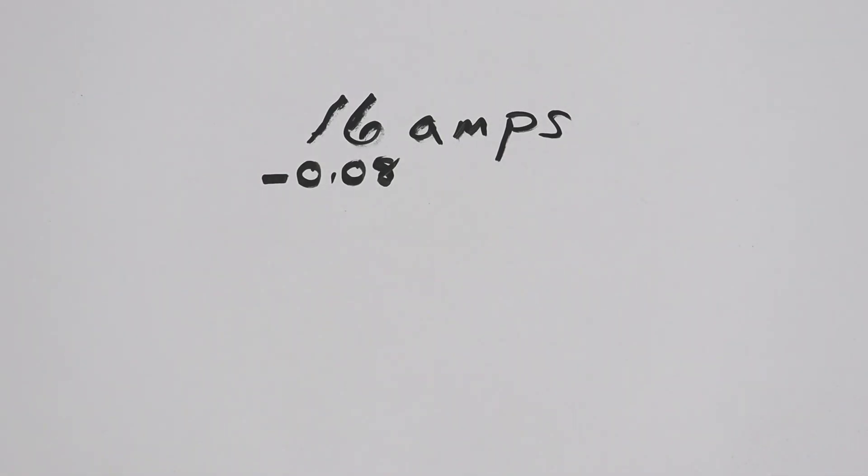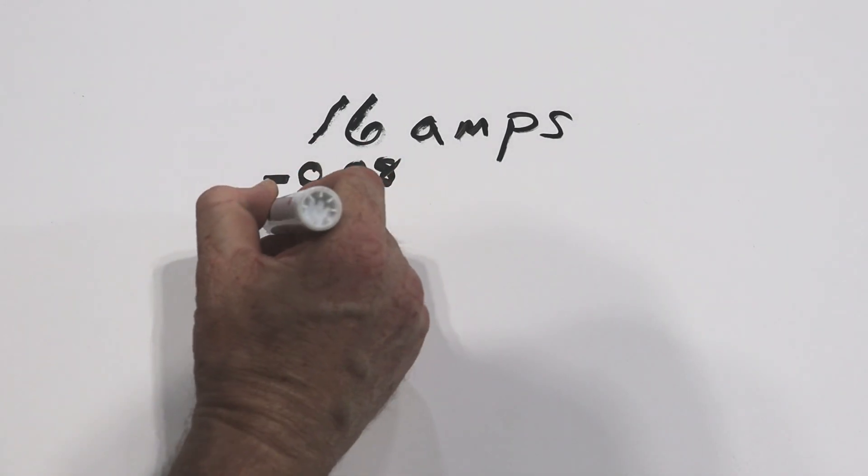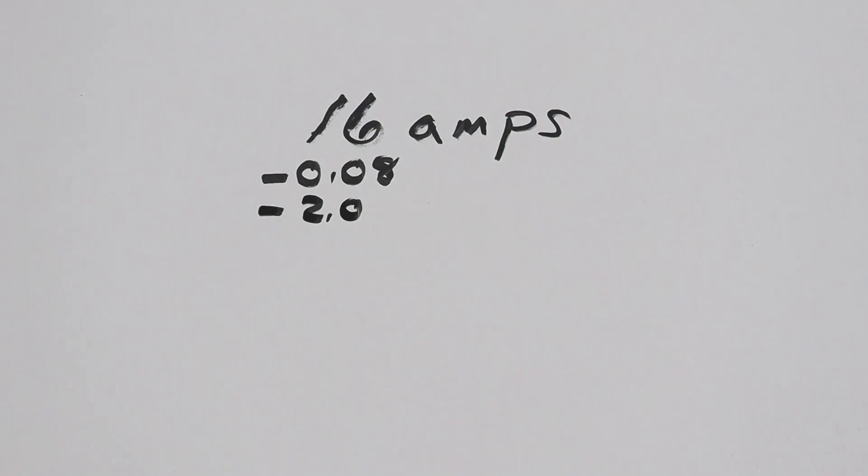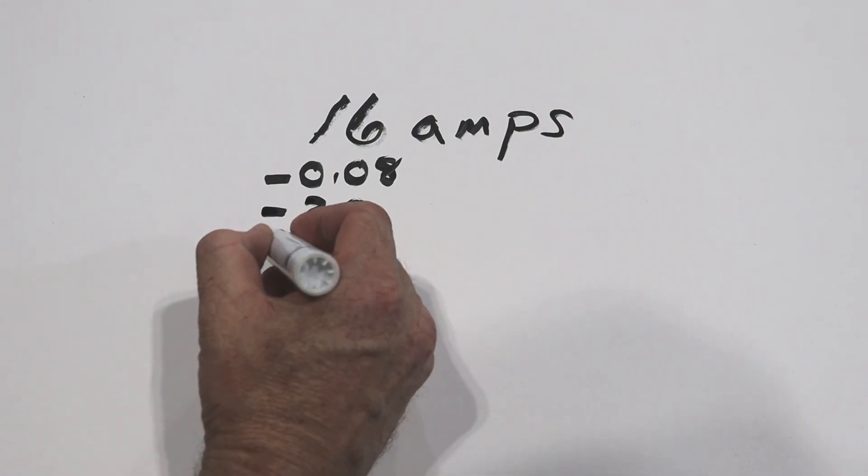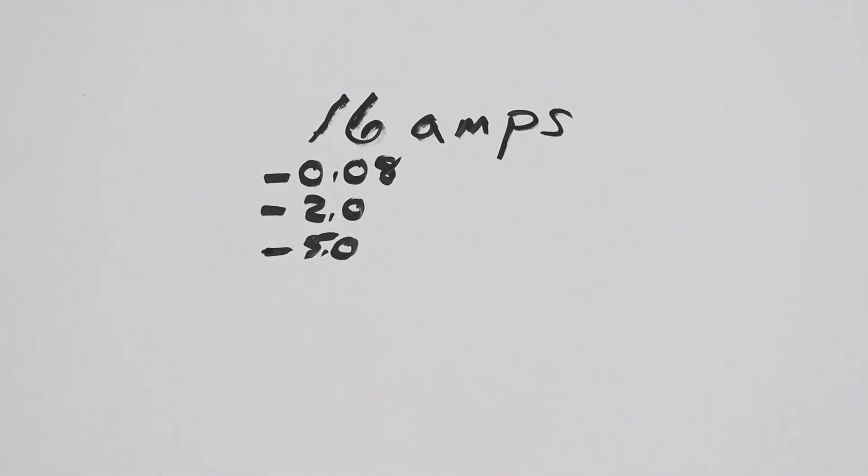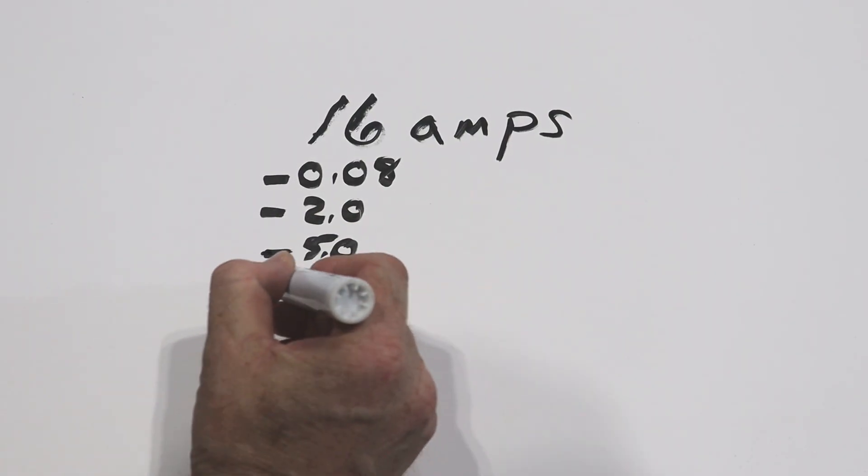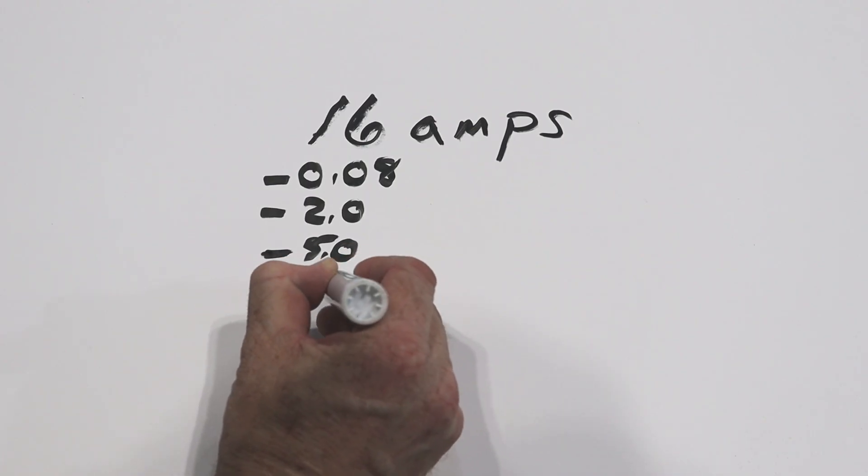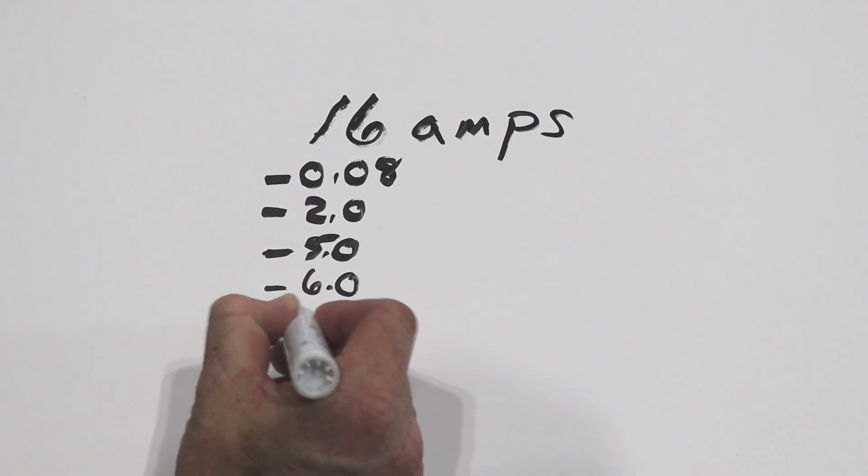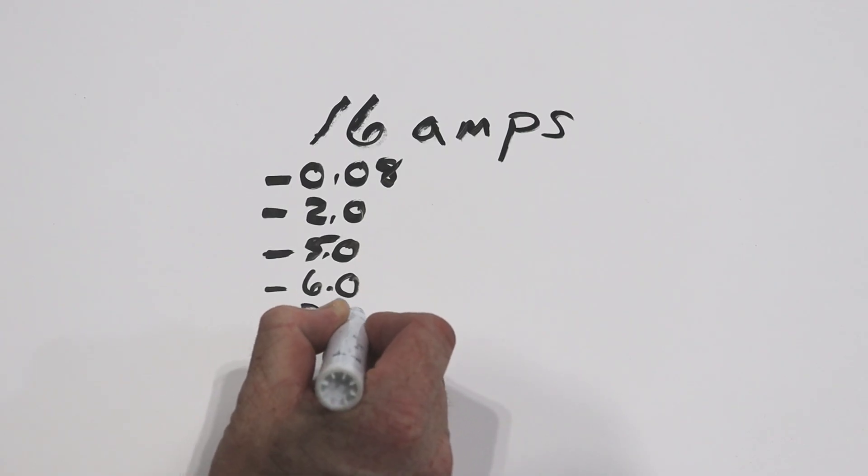But then you went out and bought a ridiculously huge big screen TV and that's going to take off let's say another two amps. And then of course you got to hook your PlayStation up to it, so that's going to take another five amps. And of course you have your huge stereo system, so let's take another six amps off. And then you have that arcade system that you bought, so that's going to take about another three and a half amps.